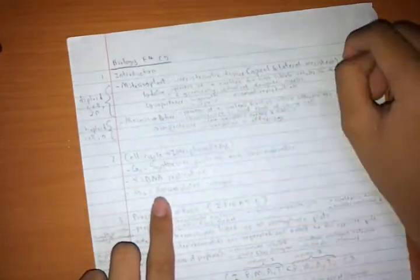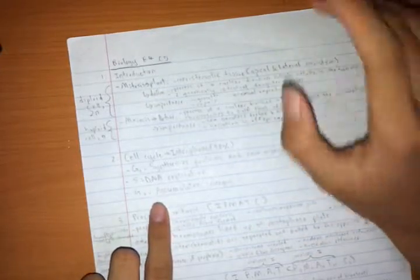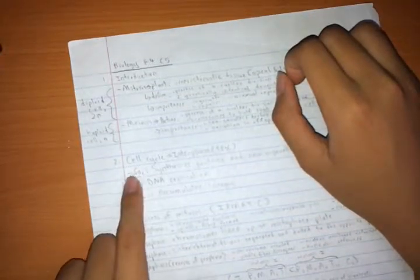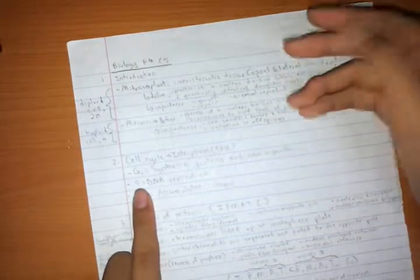They are called G1, S, and G2. If you forget it, it's simple: G1 stands for growth, S stands for synthesis - you can remember it that way.